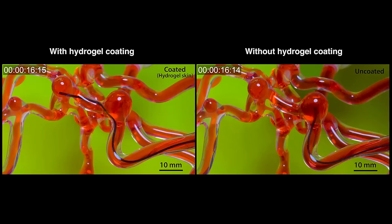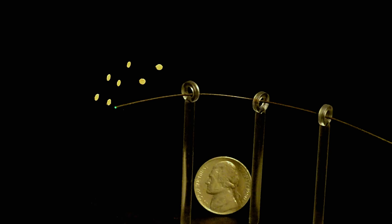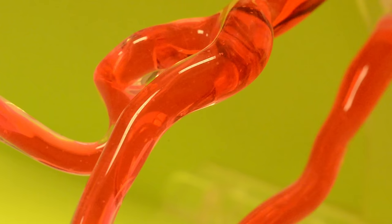The researchers say the robotic thread can be functionalized, meaning that features can be added, for example, to deliver clot-reducing drugs or to break up blockages with laser light. Their hope is to soon leverage existing technologies to test the robotic thread in vivo.